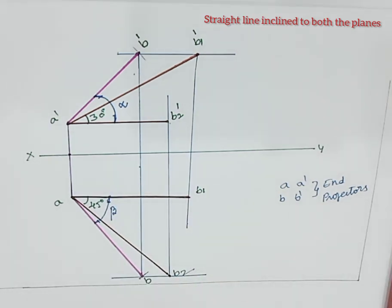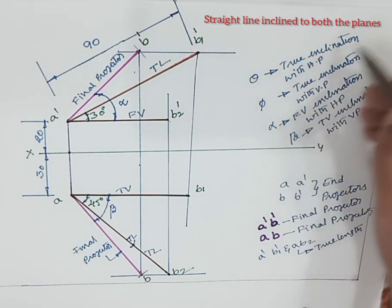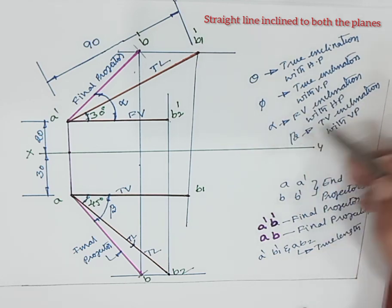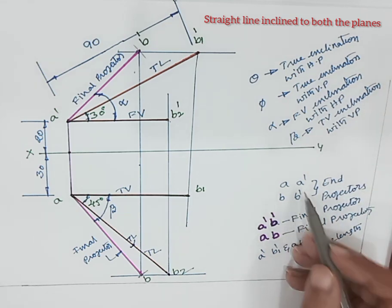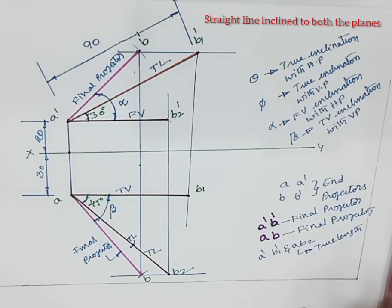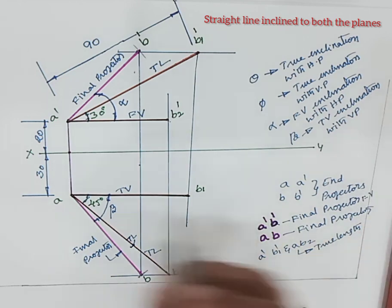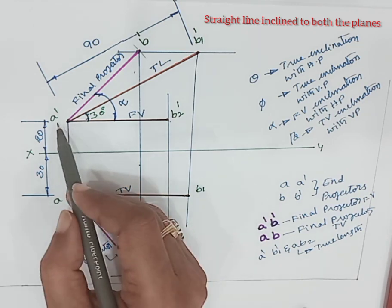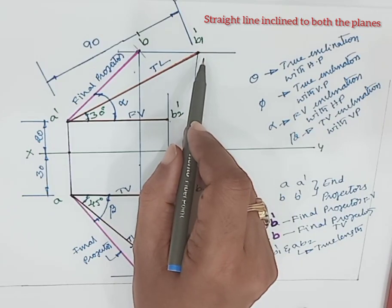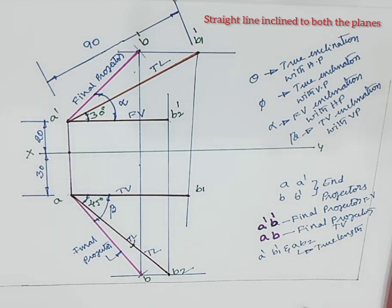After that we have to do the dimensioning. Theta is the true inclination with HP. Phi is the true inclination with VP. Alpha is the front view inclination with HP. Beta is the top view inclination with VP. A, A-dash, B, B-dash are called the final projectors. A-dash B-dash is the final projection in front view, and AB is the final projection in top view. A-dash B1-dash is the true length, and AB2 is also the true length. That covers the fundamental concept of a line inclined to both planes.